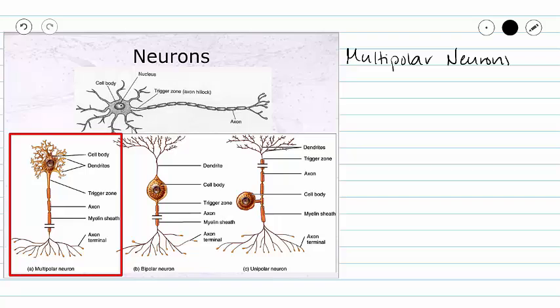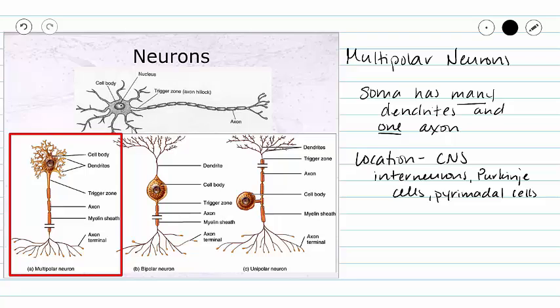We're going to begin by looking at multipolar neurons. This is what we consider to be our classic neuron shape, the one we described when we described the structure of a neuron. These neurons have one axon and many dendrites protruding from the soma. These are the most common type of neuron in the central nervous system. When we think about an interneuron, many of our interneurons are going to be multipolar neurons. Examples include interneurons, Purkinje cells, and pyramidal cells. Purkinje cells are found in your cerebellum, which is a portion of your brain, and pyramidal cells are found on the anterior side of the medulla oblongata, which is part of your brain stem. All of those are part of our central nervous system.